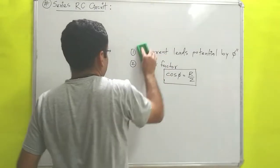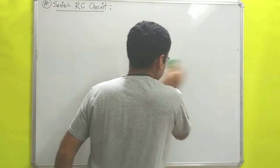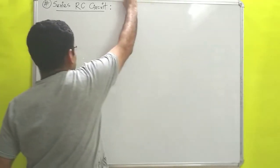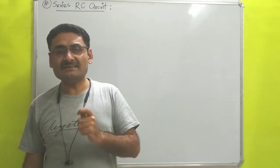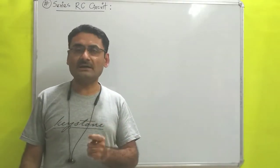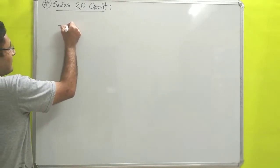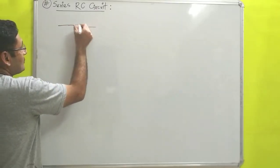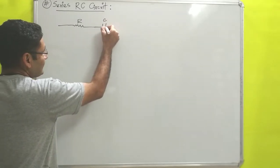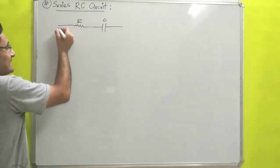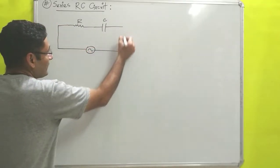First we will understand the meaning of a series RC circuit. A series RC circuit is one in which one resistor and one capacitor are used, and both are connected in series with each other. For example, we take one resistor with resistance R and one capacitor with capacitance C, both connected in series and connected with one alternating voltage source.